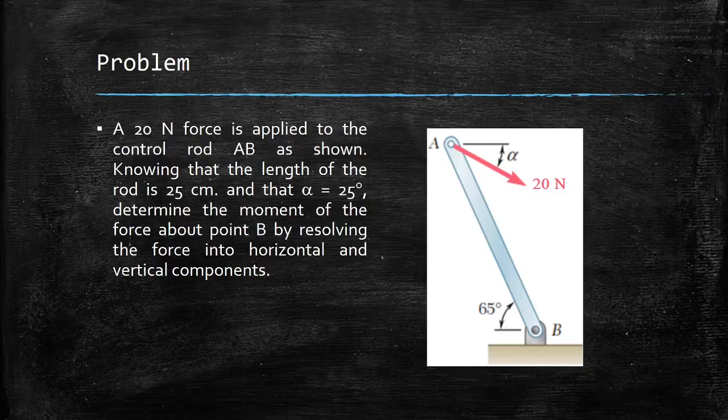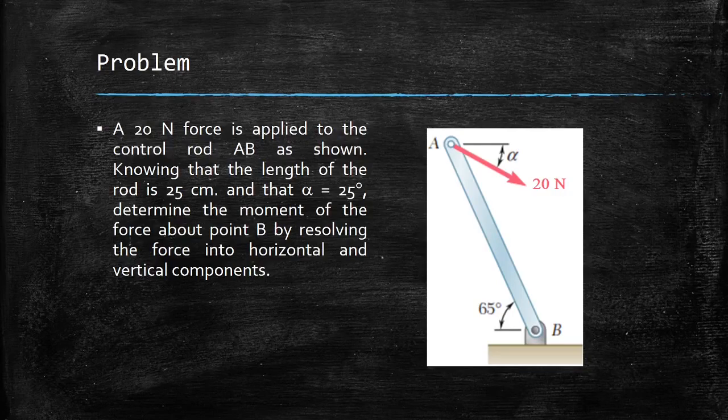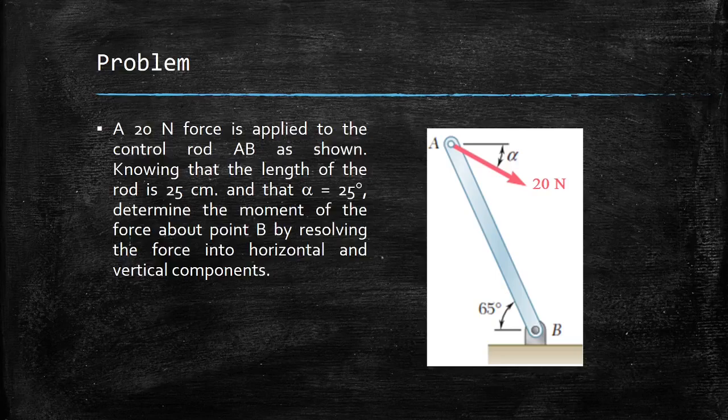Hello friends, let us try solving yet another problem from moment of a force about a point. Let us consider this problem here: a 20 newton force is applied to the control rod AB as shown, knowing that the length of the rod is 25 centimeters and that alpha is 25 degrees.